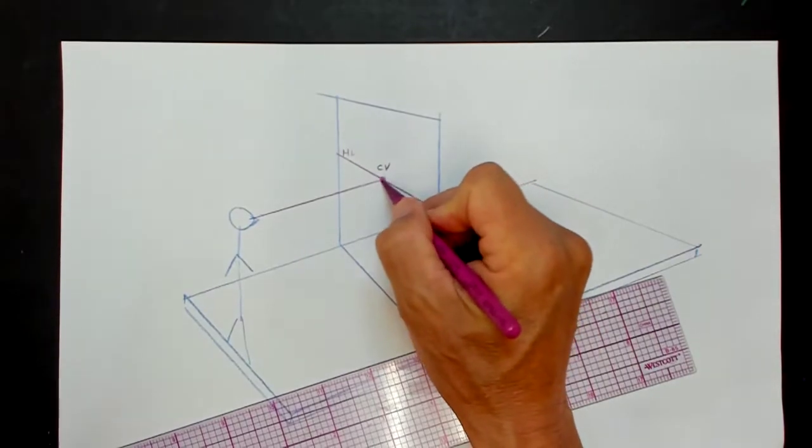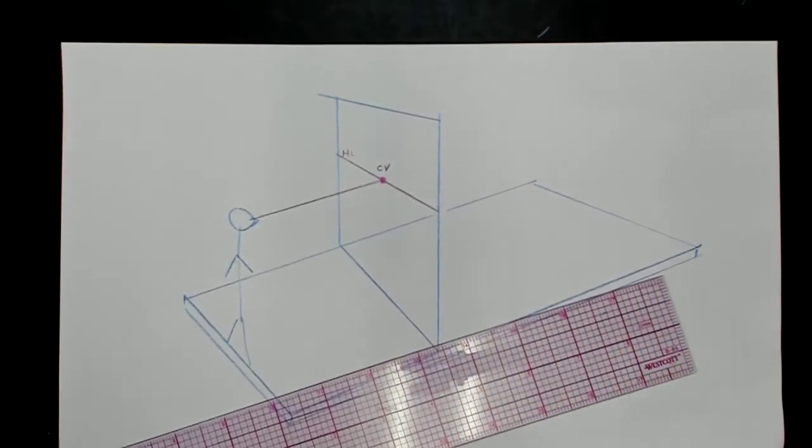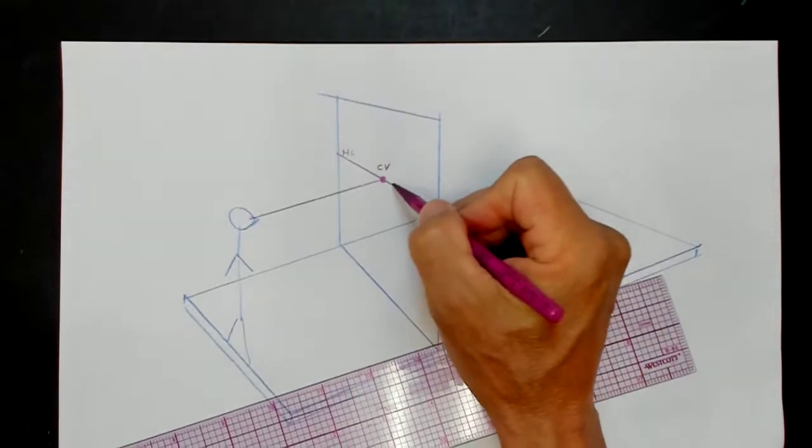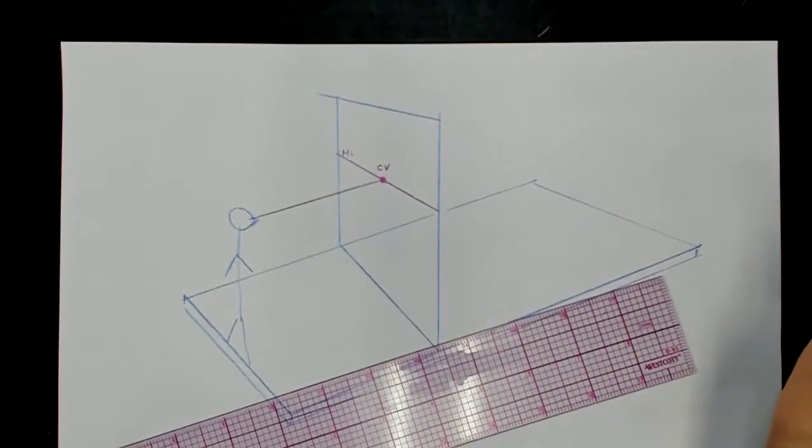This center of vision is also a vanishing point. It's where the viewer is looking, but since it's a dot here on the horizon line, you can also use it as a vanishing point.